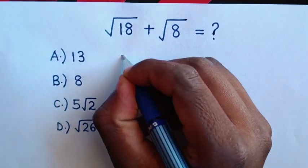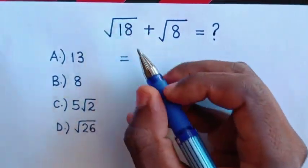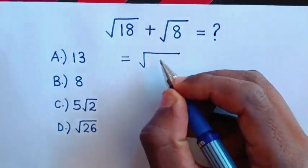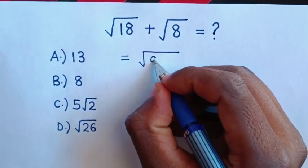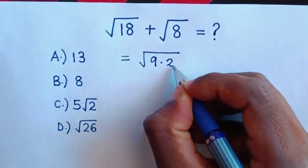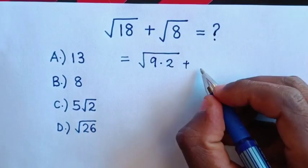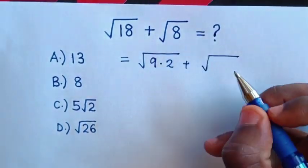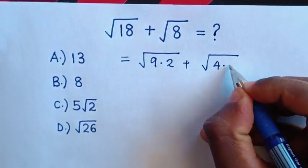From this expression, it will be equal to square root of 18 is same as 9 times 2, plus square root of 8 is same as 4 times 2.